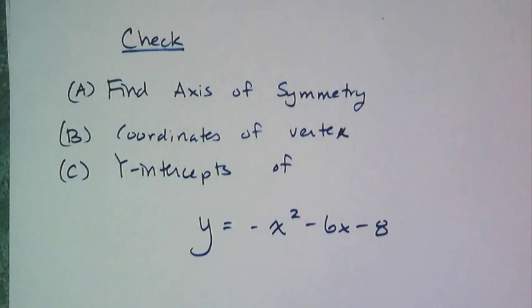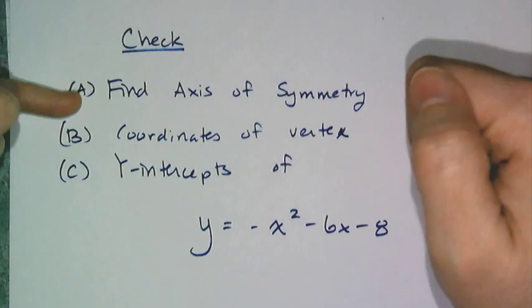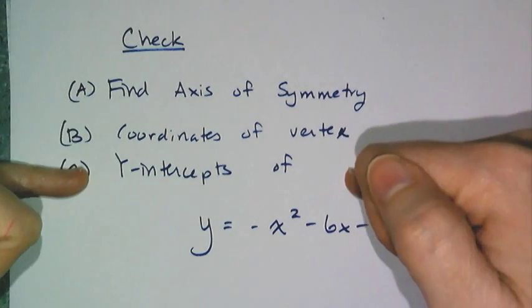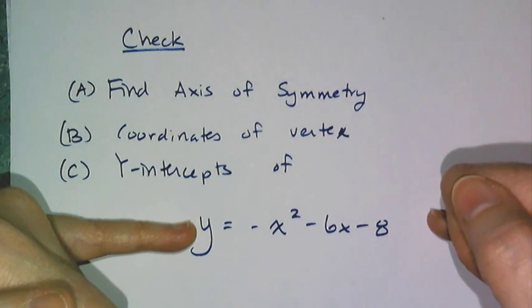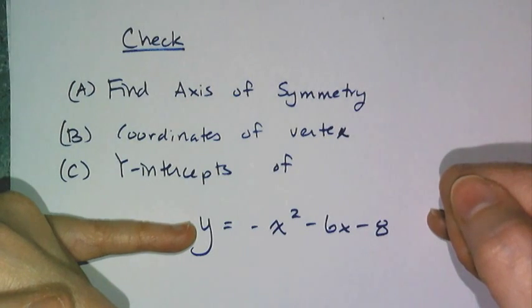And now for your check, I'm not going to actually have you graph something at home. You're going to graph a bunch of stuff in class. But I do want you to practice getting the information from the equation. So I want you to find the axis of symmetry, find the coordinates of the vertex, and the y-intercept of this equation: y equals negative x squared minus 6x minus 8.